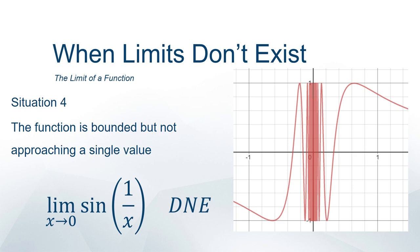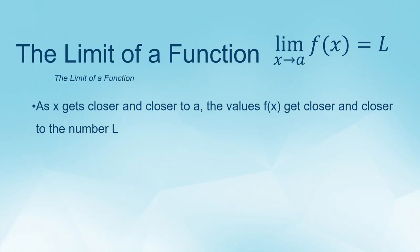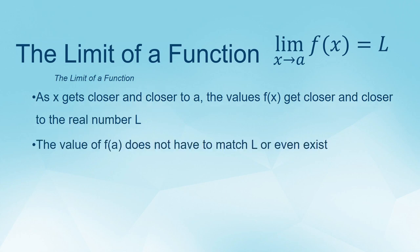Those are the main reasons a limit fails to exist, though other situations can arise. To recap: the core idea is that as x gets closer and closer to A, the values of f of x should get closer and closer to some number L. The value f of a does not have to match the limit — there could be a hole, or the point could be above or below. The limit still equals L as long as you can get as close to it as you want, but it must be just a single point removed or displaced.